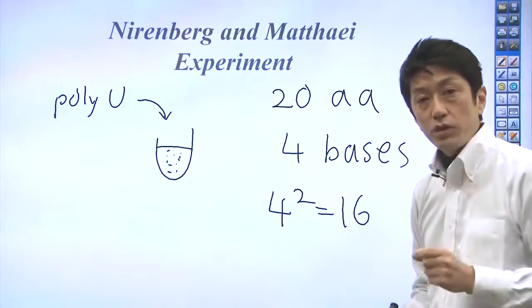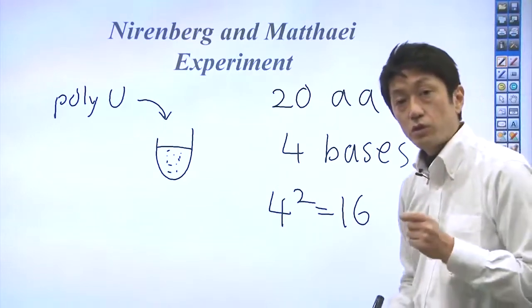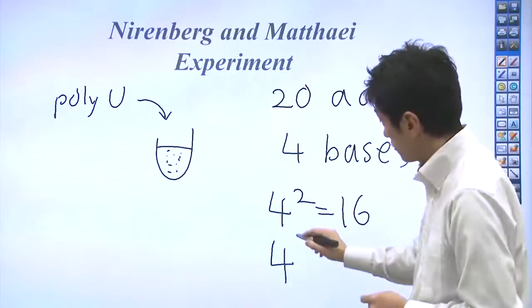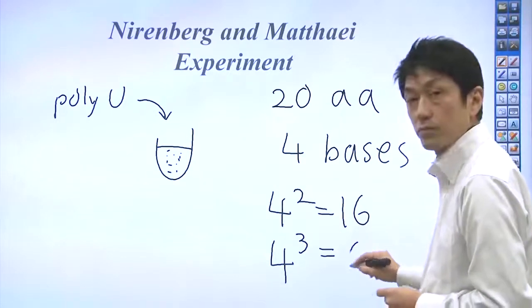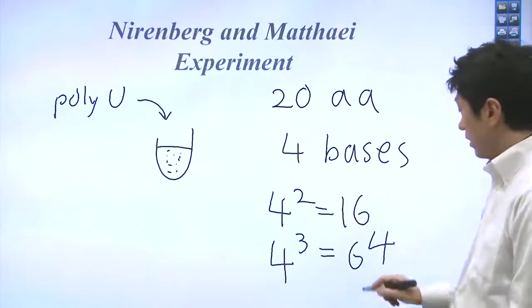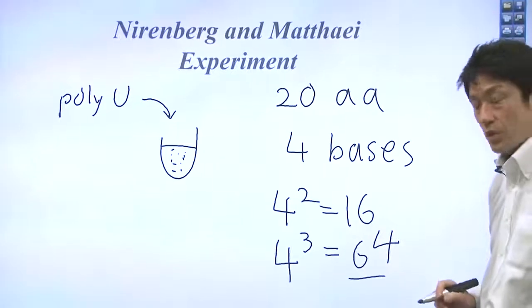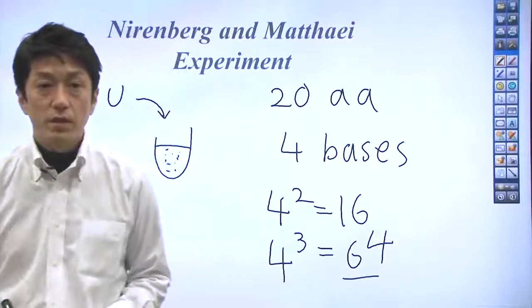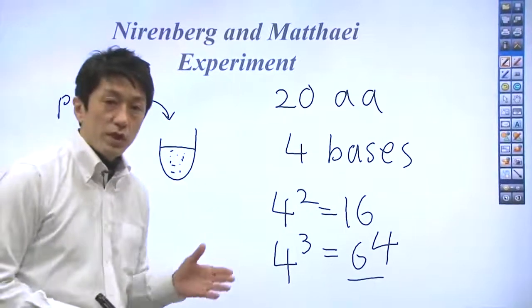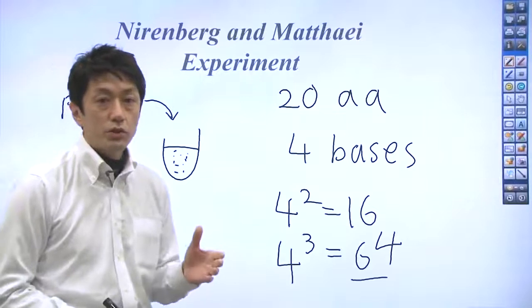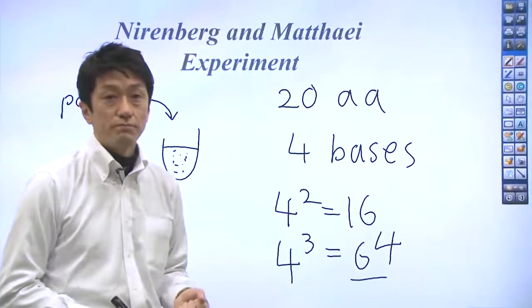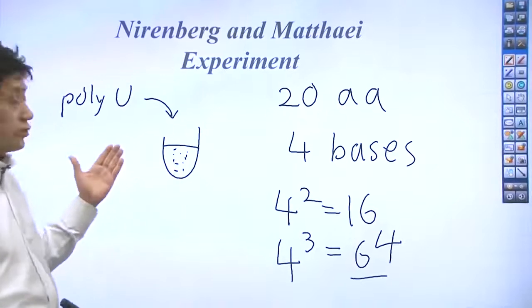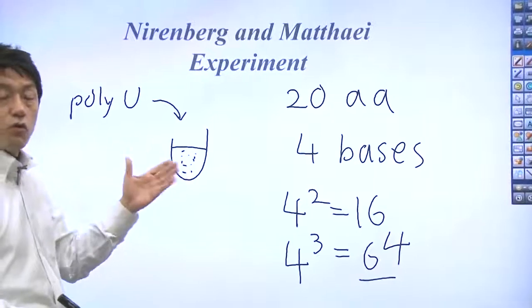But 3 nucleotide units could give you 64 possible combinations. So this is enough to encode all of the 20 different amino acids. So the 3 nucleotide units should be the coding unit of genetic code. That's why UUU is the code for phenylalanine.